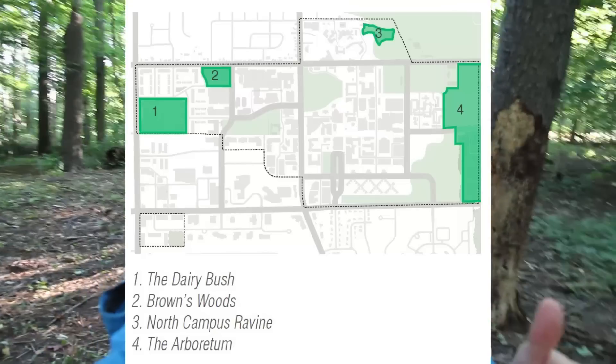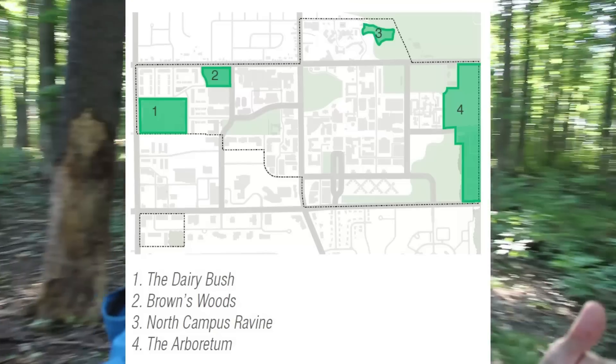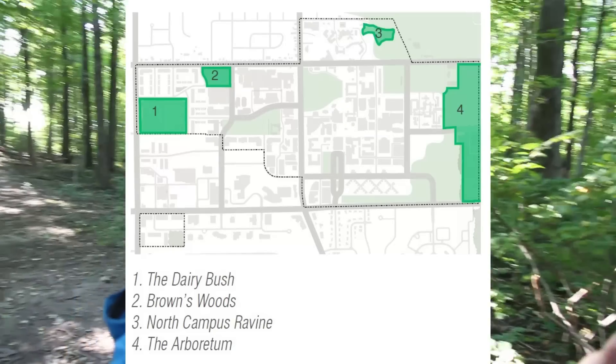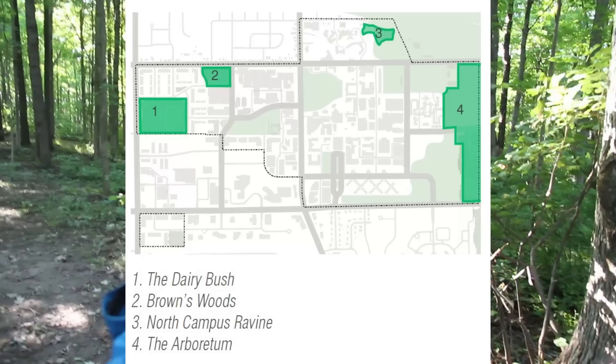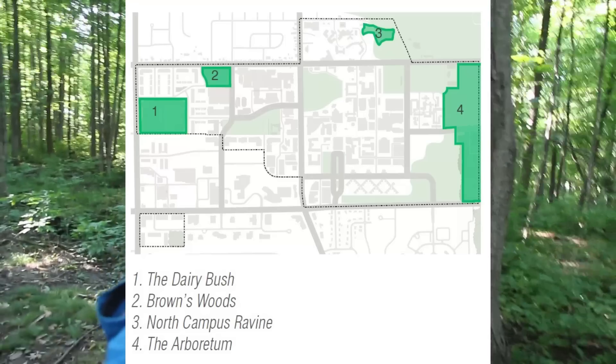We're going to introduce you to the Dairy Bush, to the various couple of woodlots in the Arboretum, the North Campus Ravine, and Brown's Woods.